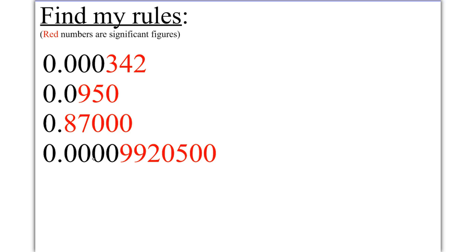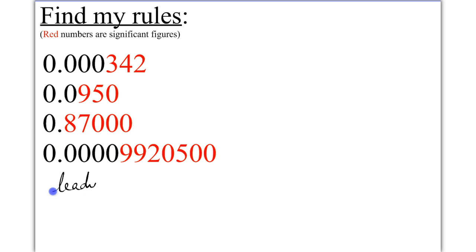For example, given these four numbers, the black numbers are not significant while the red numbers are significant. Notice that all the zeros in front, which we call leading zeros, are not significant. So leading zeros are never significant. Numbers that are not zero are going to be always significant.